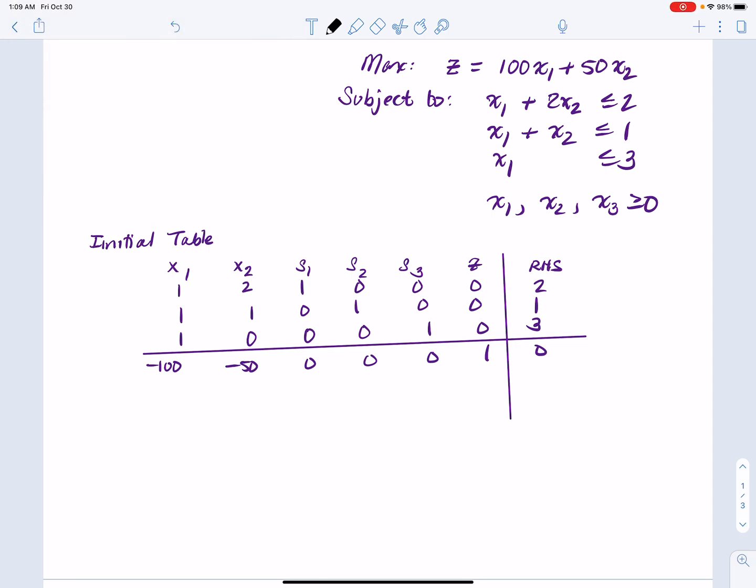So we left off where we formulated the new maximization problem that corresponded to the original minimization problem. So I've already converted to a table because this is a skill that we've used before. Just remember that every constraint requires a slack variable.